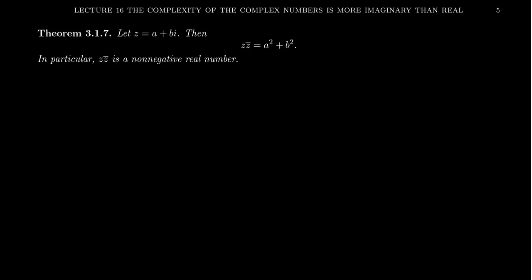Why do we care about this? This is going to be helpful as we do complex division because of the following property: if you take a complex number and you multiply by its conjugate, this is actually equal to a sum of squares of its real and imaginary parts. You can see this very quickly. If you take z times z-bar, you're going to take a plus bi and multiply by its conjugate, a minus bi.